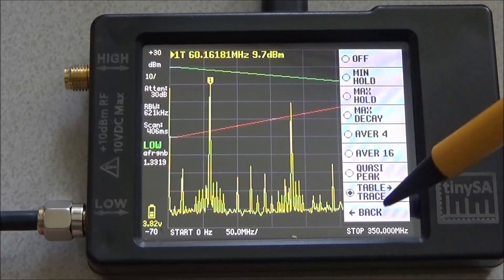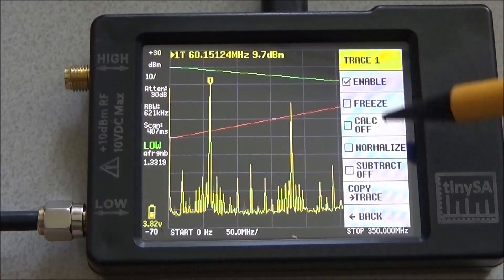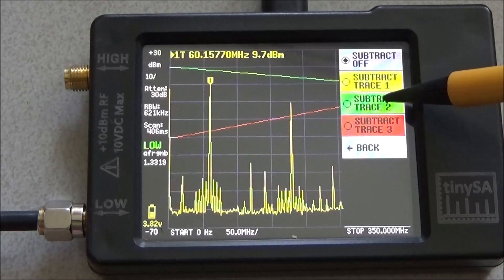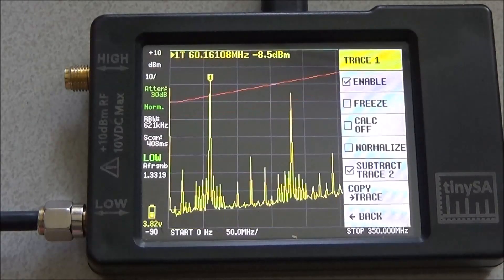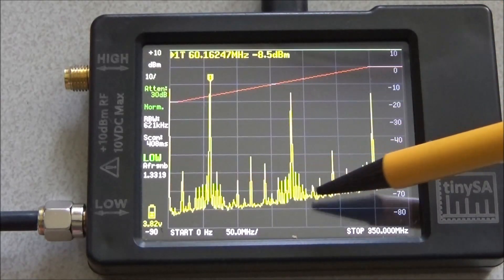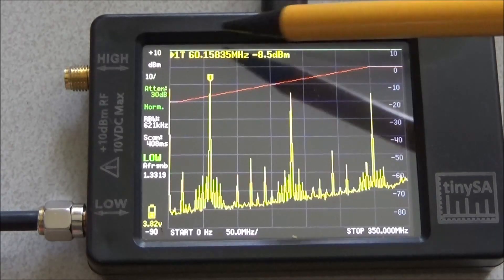Now what you can do is you can subtract this line from trace 1. So you go back to trace 1, and you do subtract, and we subtract trace 2. And what you see is we've now compensated for the frequency dependent gain of the amplifier.